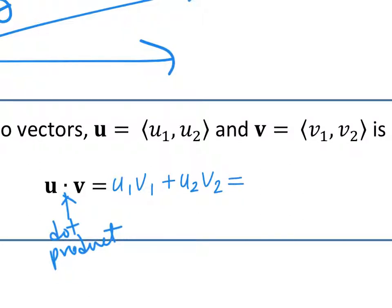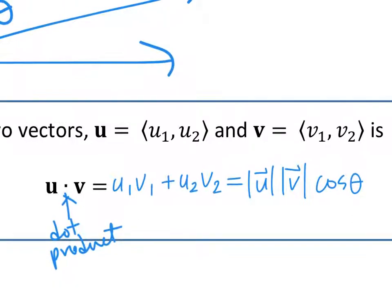The other definition — a little bit trickier — is the magnitude of u times the magnitude of v times the cosine of the angle in between them. We're going to have to memorize these formulas.